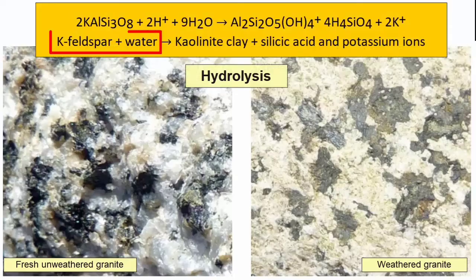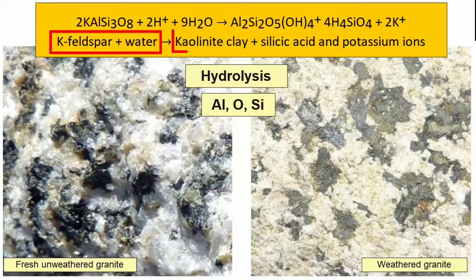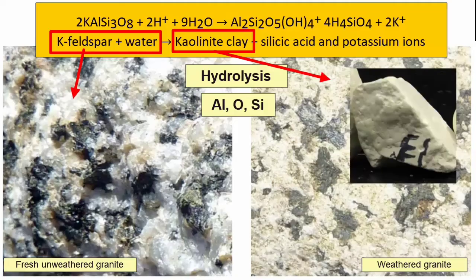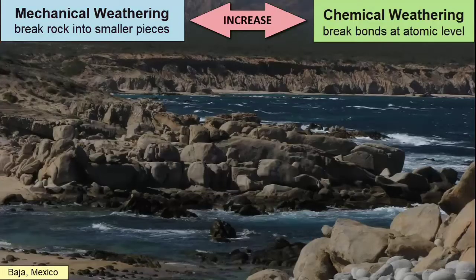Hydrolysis happens when water interacts with a mineral that contains aluminum (Al), oxygen (O), and silicon (Si). During dissolution of such a mineral, the water will react with the ingredients to form a new clay-family mineral. For example, when potassium feldspar reacts with water, it forms the clay mineral kaolinite. Clay minerals are often white, though they can come in multiple colors, and the crystals that form are microscopic, appearing like a fine powder similar to grains of flour. This image shows kaolinite — the white powder forming along the edges of an altered potassium feldspar in a granite.